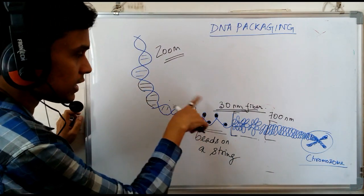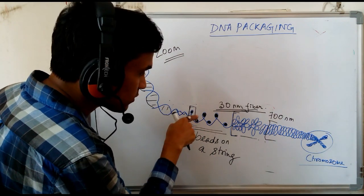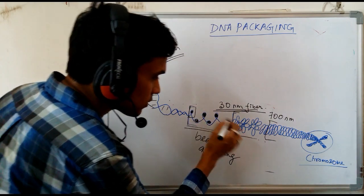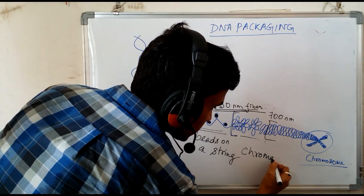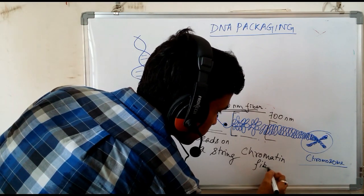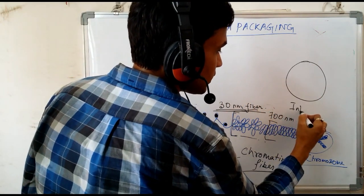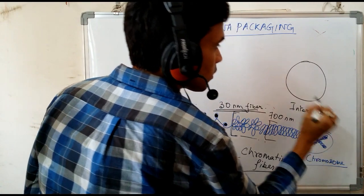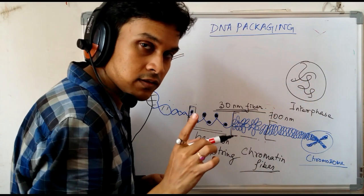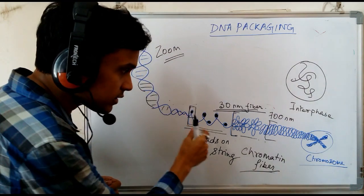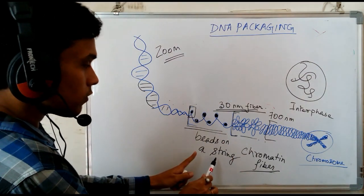If you consider the string as the DNA — the fiber or thread-like structure — there are small beads inside the loop region. This bead-on-a-string structure is called chromatin fiber. As I mentioned in my last class, at the interphase of the cell, the DNA chromosome structure looks something like this, also called chromatin fiber. So this is chromatin fiber, or beads-on-a-string structure, where the beads are the units and DNA is the string.